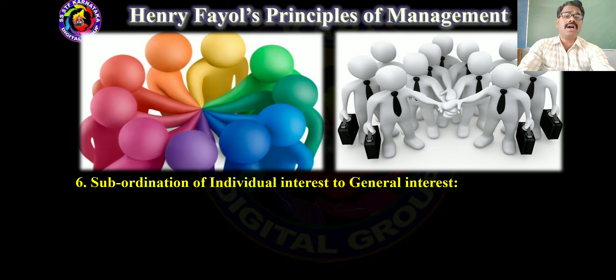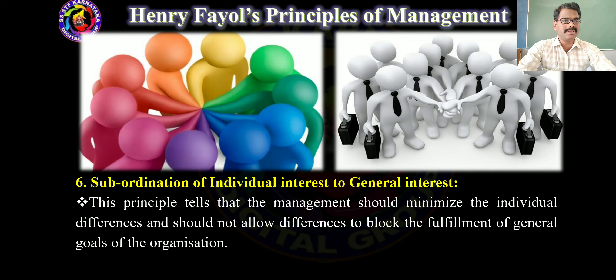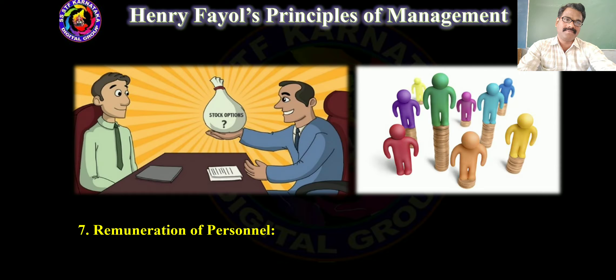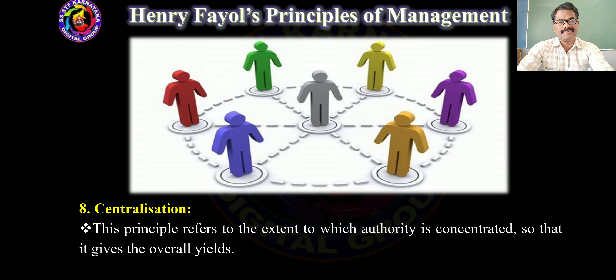Subordination of Individual Interest to General Interest: This principle tells that management should minimize individual differences and should not allow differences to block the fulfillment of general goals of the organization. Remuneration of Personnel: The methods of payment should be fair and afford maximum satisfaction to the employees.